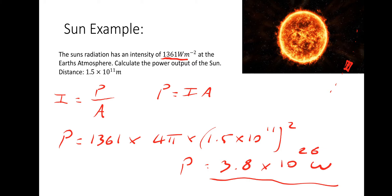If you compare that to something as straightforward as running a laptop — which might run at 300 watts — this is many, many times greater than the amount of energy the entire Earth would use in a single year by a massive amount. The amount of energy given off by the sun in one second compared to our usage is just astronomical. It's a very big number — that's a lot of zeros.